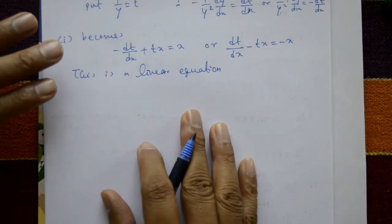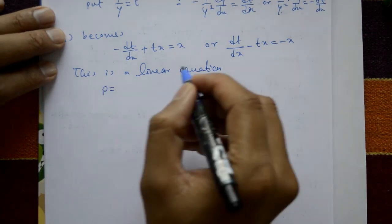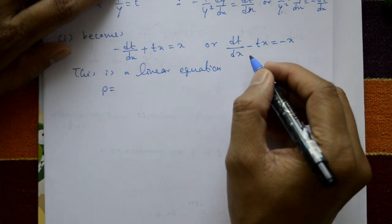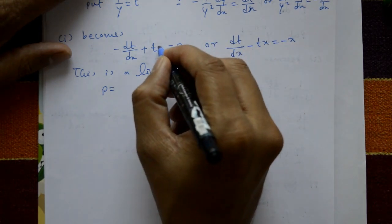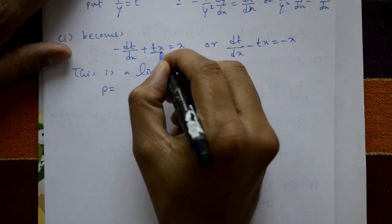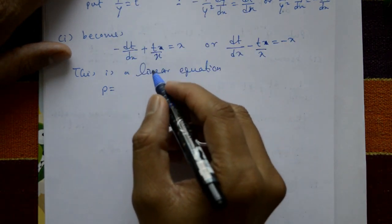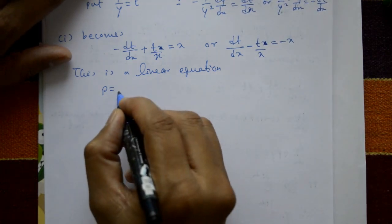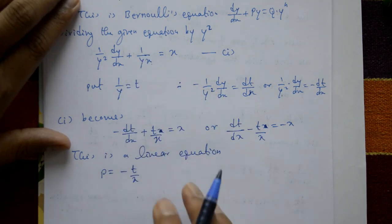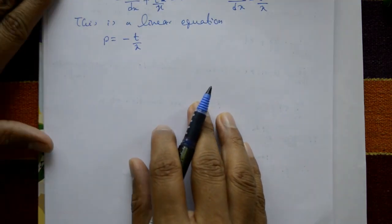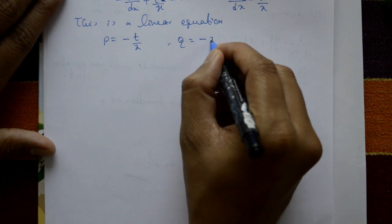Using the linear equation method: p is equal to -1/x (since t/x term gives p = -1/x), and q is equal to -x only.